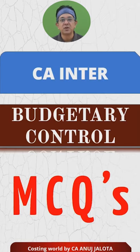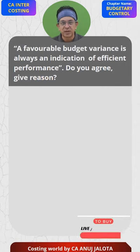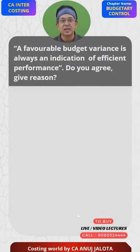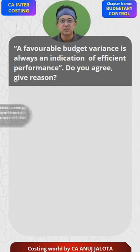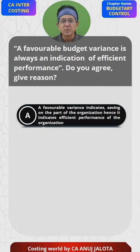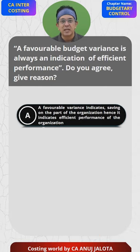CA Inter Budgetary Control MCQs. A favorable budget variance is always an indication of efficient performance — do you agree? Give your reasons. Option A: A favorable variance indicates saving on the part of the organization, hence it indicates efficient performance of the organization.